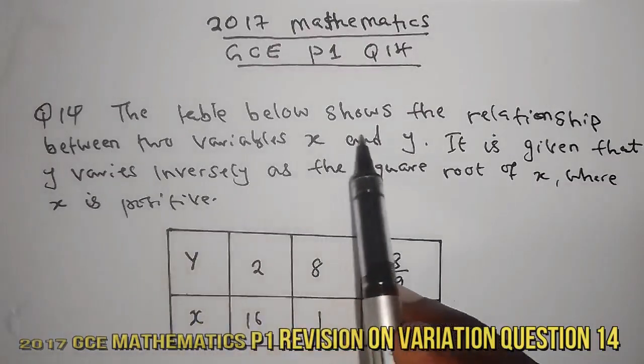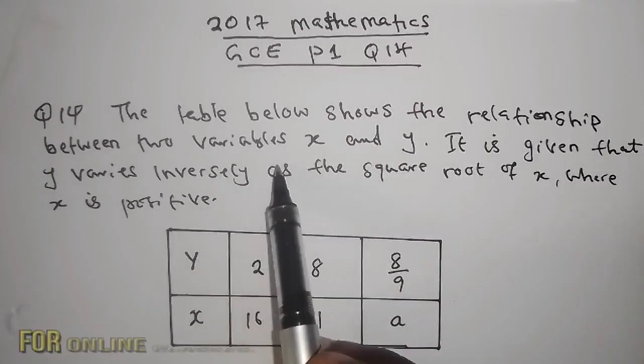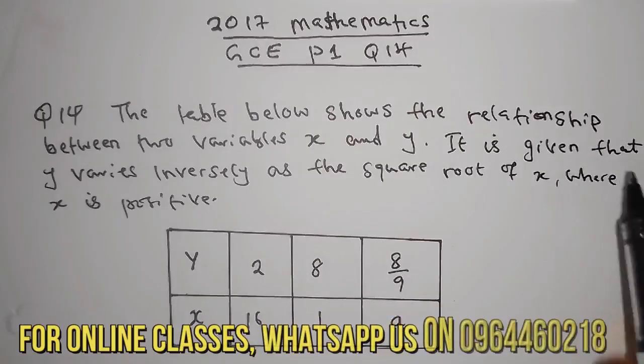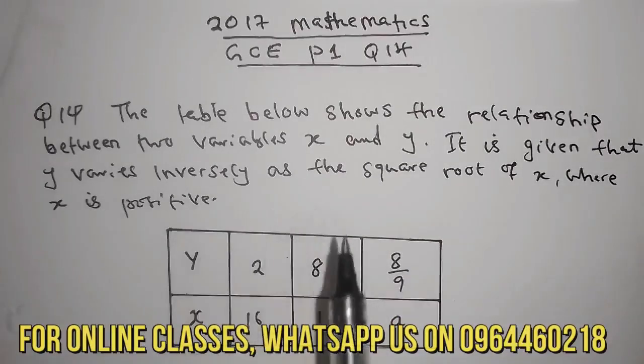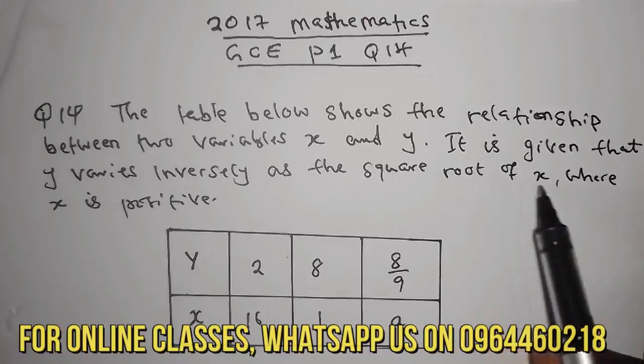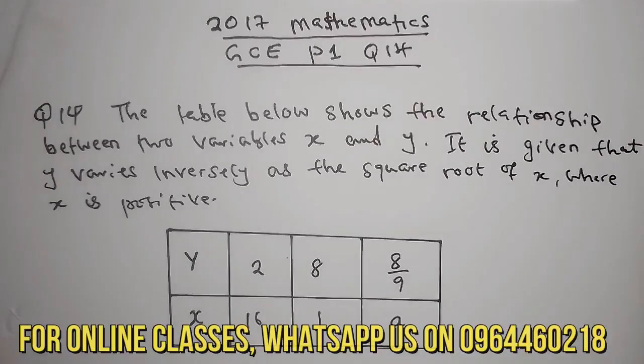So the question reads: the table below shows the relationship between two variables, x and y. It is given that y varies inversely as the square root of x where x is positive.